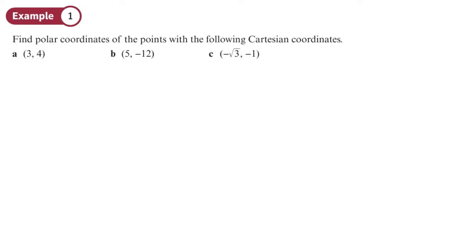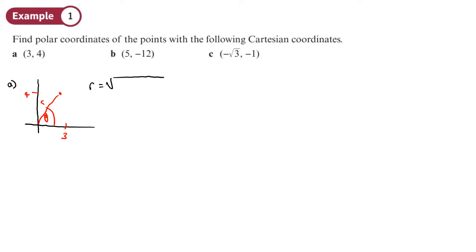Now we need to turn Cartesian coordinates into polar coordinates — always draw a sketch because it's really important that we get the angle right. For the point (3, 4), we want to find r and theta. We can see that r = √(3² + 4²) = 5.